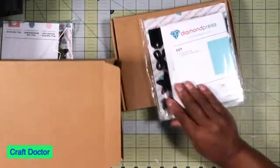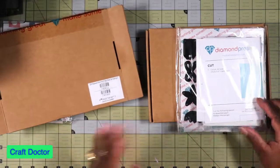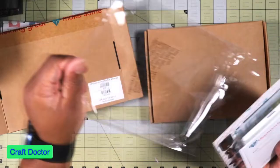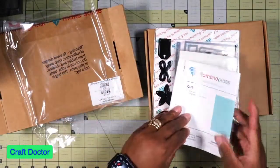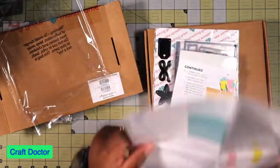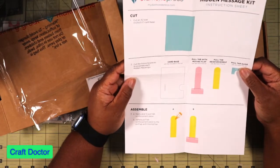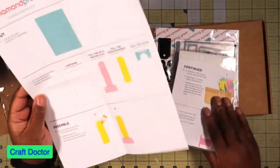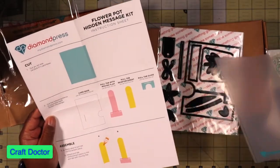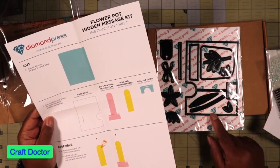This first one is the flower pot stamp and die set hidden message kit. Let's see what it's got in here. I love that they have these inspiration sheets. So cut the following pieces to assemble each hidden message. I don't think it's in here though, but it's kind of in here with this piece.